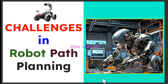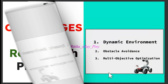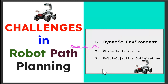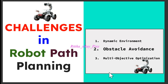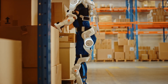Now we will discuss challenges in robot path planning and the role of metaheuristic optimization algorithms. First, in a dynamic environment we have moving obstacles like vehicles and people, or sometimes changes in the environment that require real-time adjustment to the planned path. The second challenge is obstacle avoidance — the robot needs to plan a collision-free path with both fixed and dynamic obstacles.